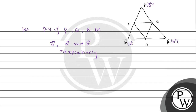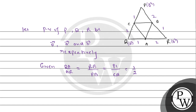The position vectors have been assigned: P is 0, Q is vector a, R is vector b. Now, as given, QA/AR = RB/BP = PC/CQ = 1/2. So QA upon AR is 1/2, RB upon BP is 1/2, and PC upon CQ is also 1/2 — all these ratios are 1:2.